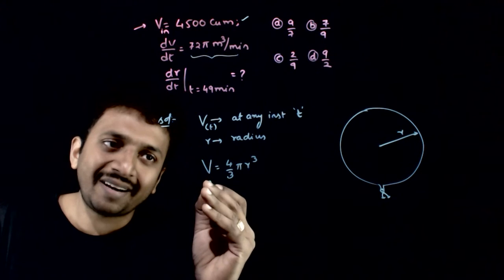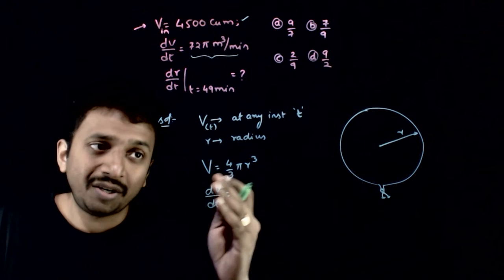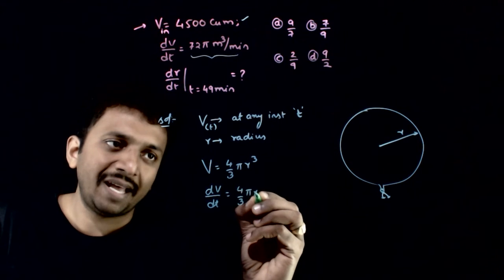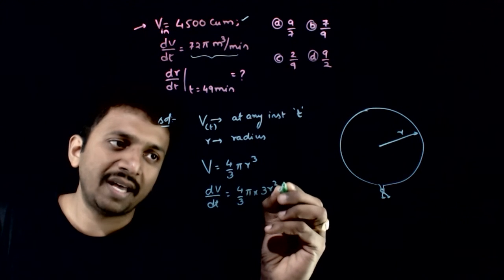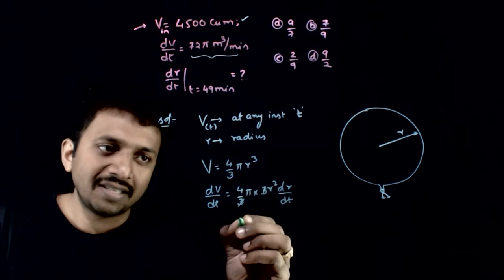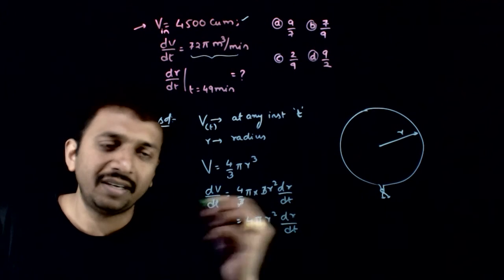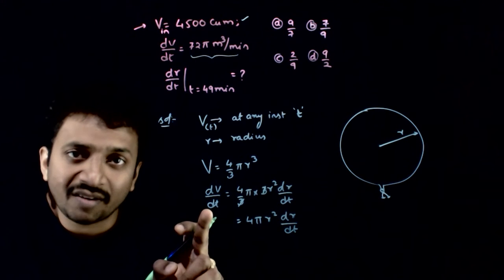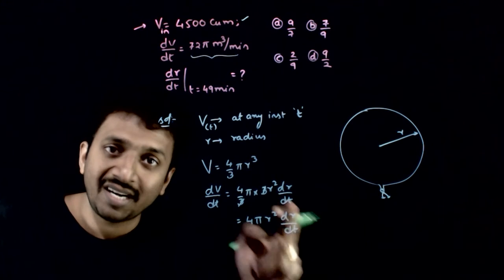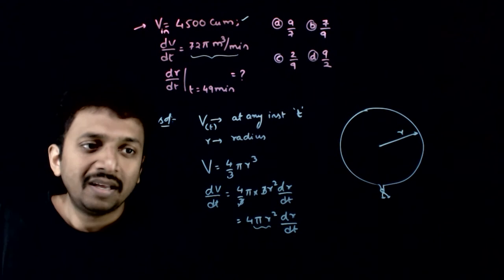Now, what is the rate of change of volume, and how is it related to the rate of change of the radius? It is (4/3)π times 3r² dr/dt. That is, if you know the rate at which volume changes, we can simultaneously calculate the rate at which the radius changes, if we know the radius at that instant.